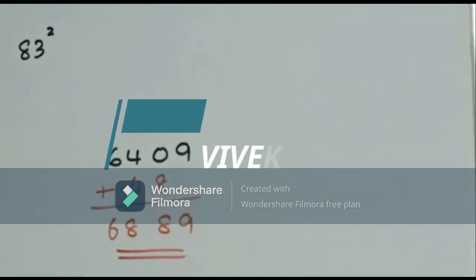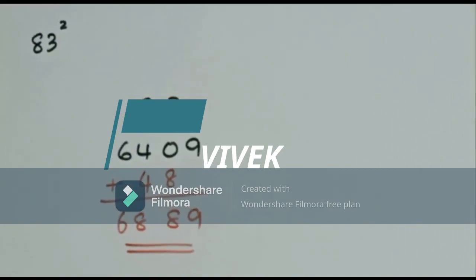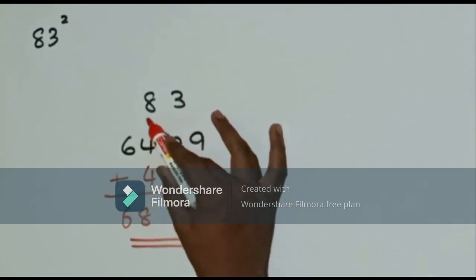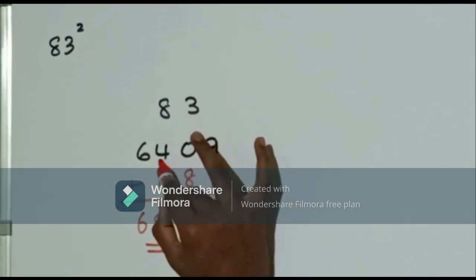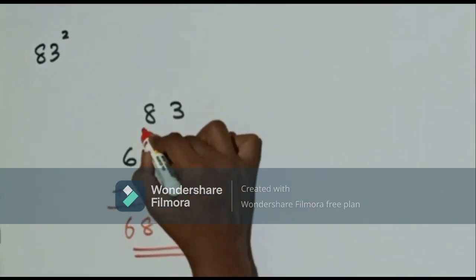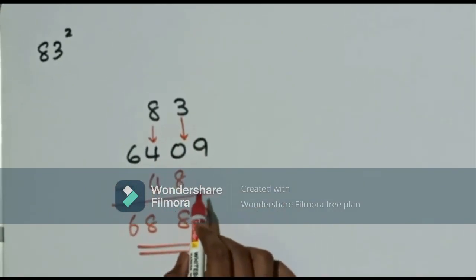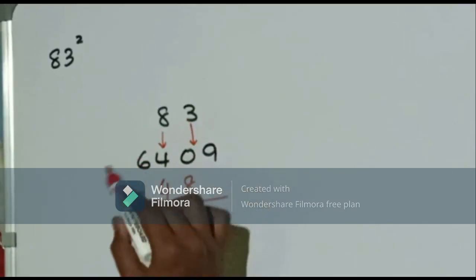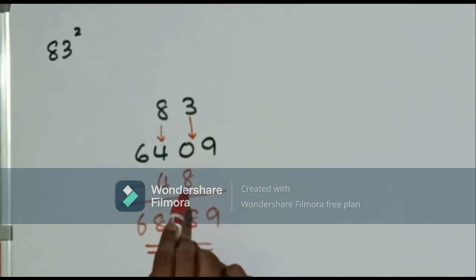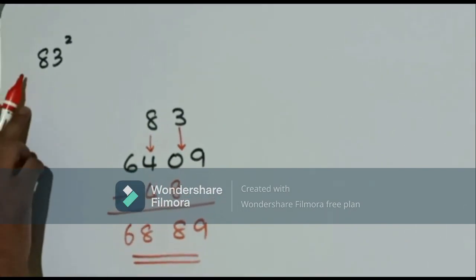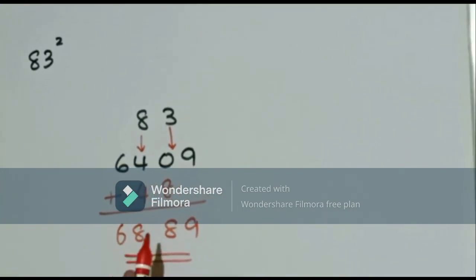This is called a Japanese trick to find squares. We need to find the square of 83. First, in the first step, we need to find the square of 8 times 3, which is 64 and then 9. In the second step, we multiply the product of these 2 numbers by 2, which is 48. Now, we need to add these 2 and we get the answer of this square, which is 6889.